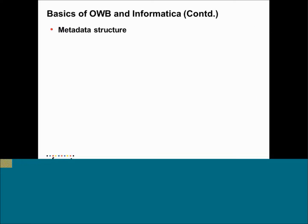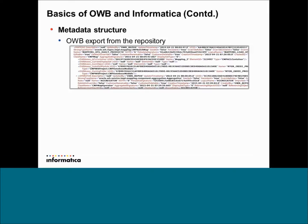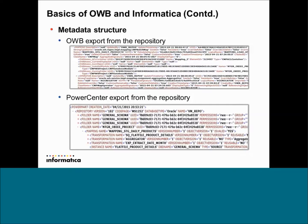Let's get into some technical details now. Here is the metadata structure of an OWP export of a mapping. At the top you can see the mapping name — SDG daily products — it has got a transformation aggregator and so on. Now let's look at an Informatica PowerCenter job export. Something similar: mapping name, set of transformations like aggregator, expression, etc. If you look at these two XMLs, it is possible to convert from one format to another. We already have the data in XML format — it's just a matter of converting from one XML format to another.